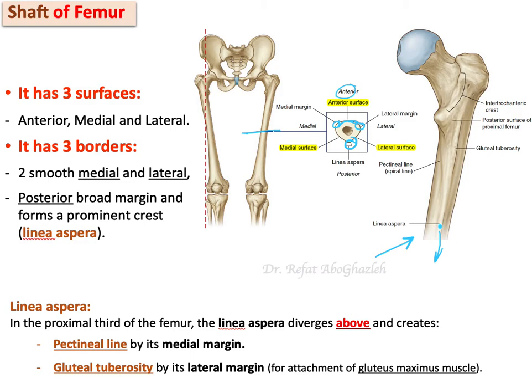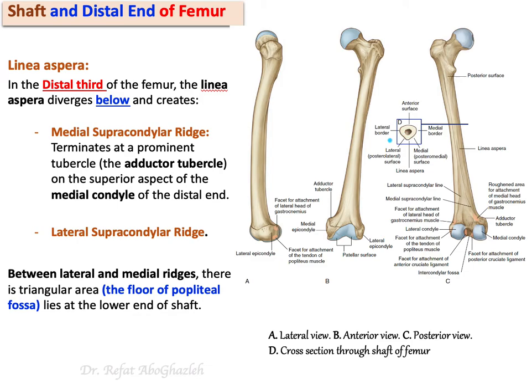The linea aspera continues superiorly toward the proximal end of the femur, where it diverges into two lines. Medially it becomes the pectineal line, also called the spiral line, for the attachment of the pectineus muscle. Laterally, there is a protruded bony area known as the gluteal tuberosity, which is for the attachment of the gluteus maximus muscle.